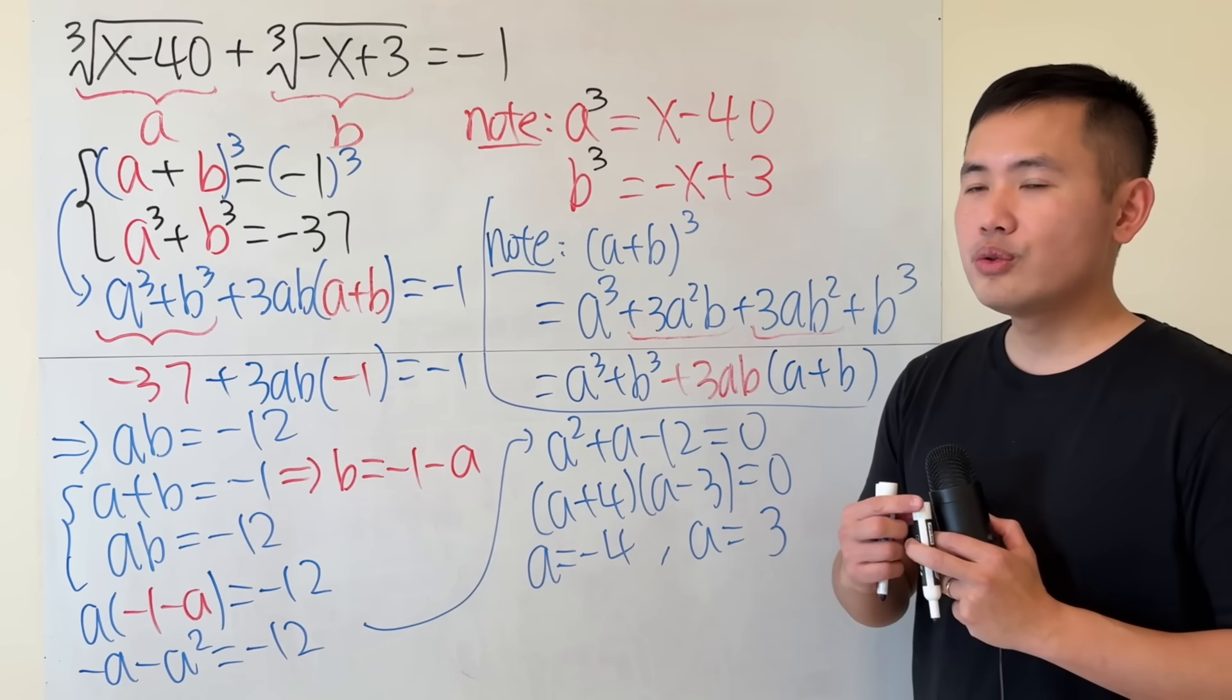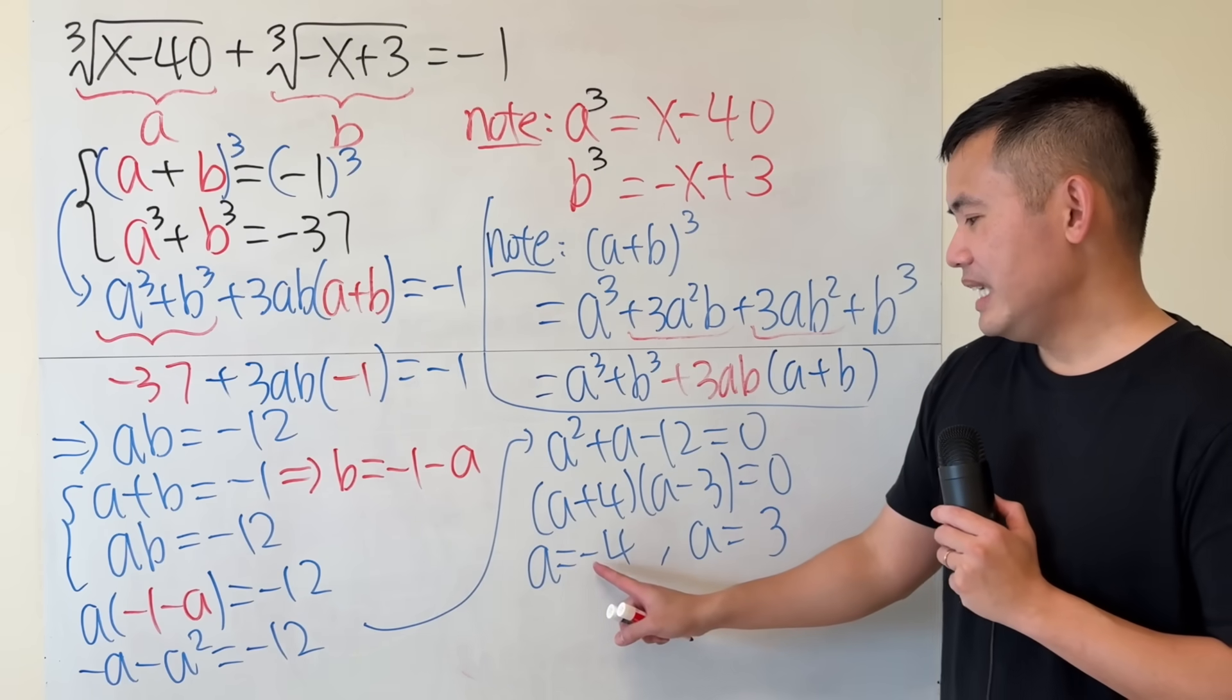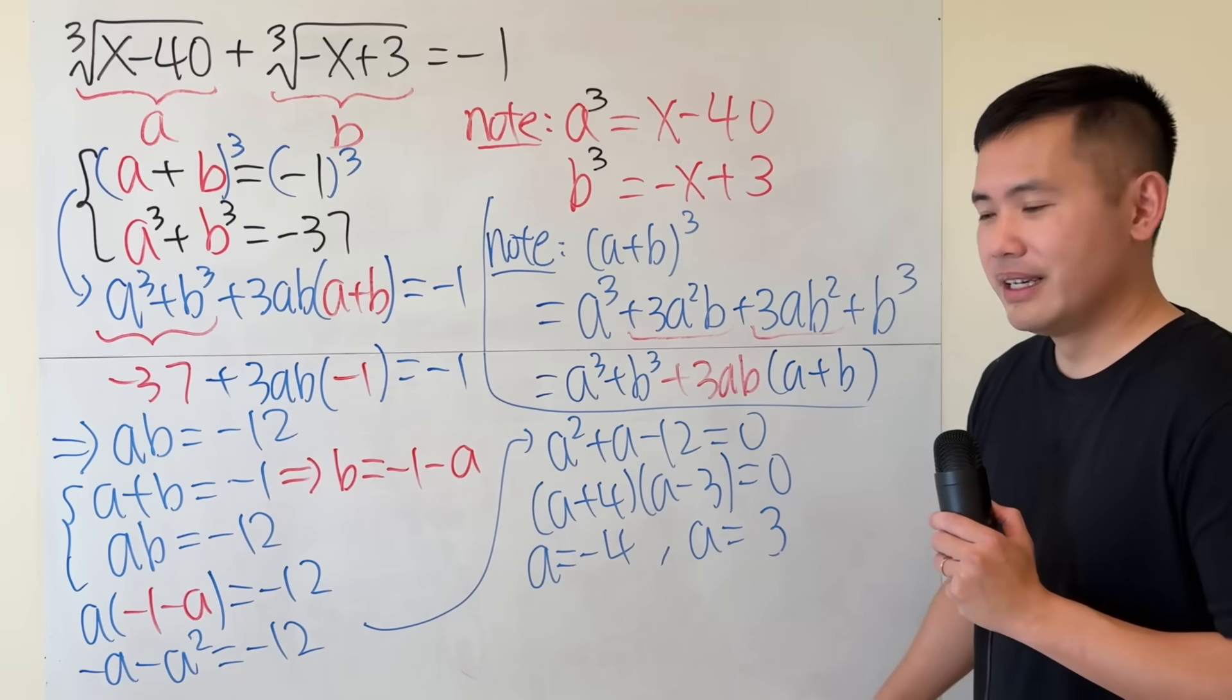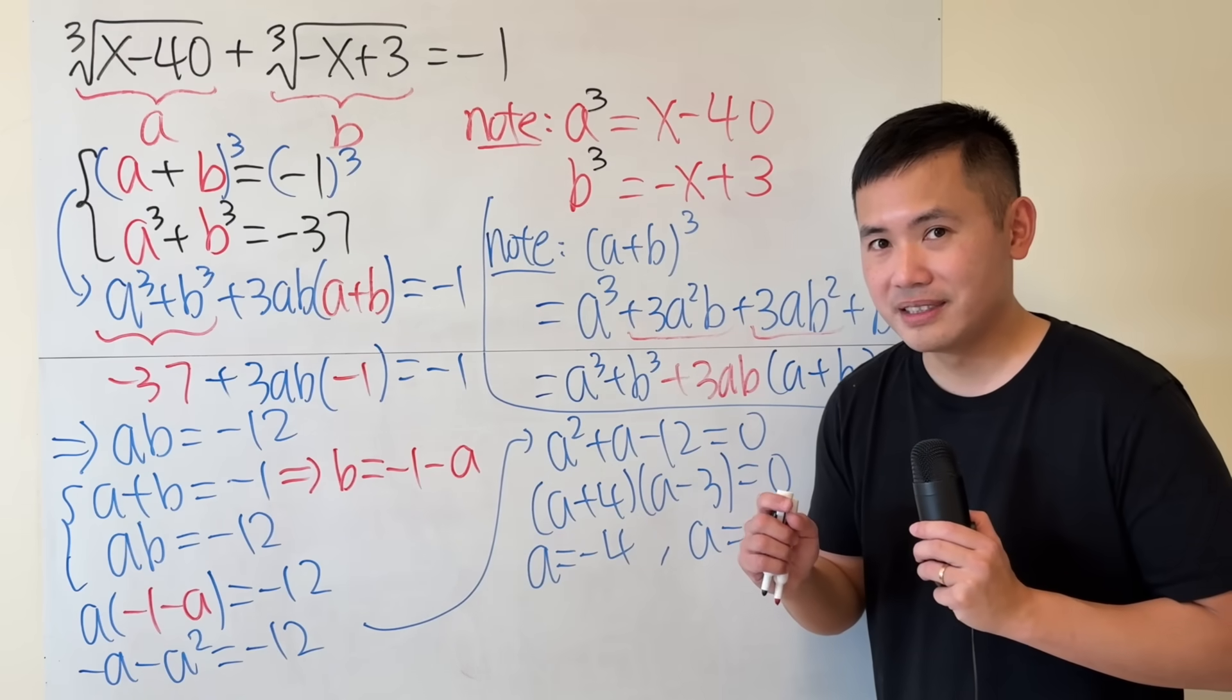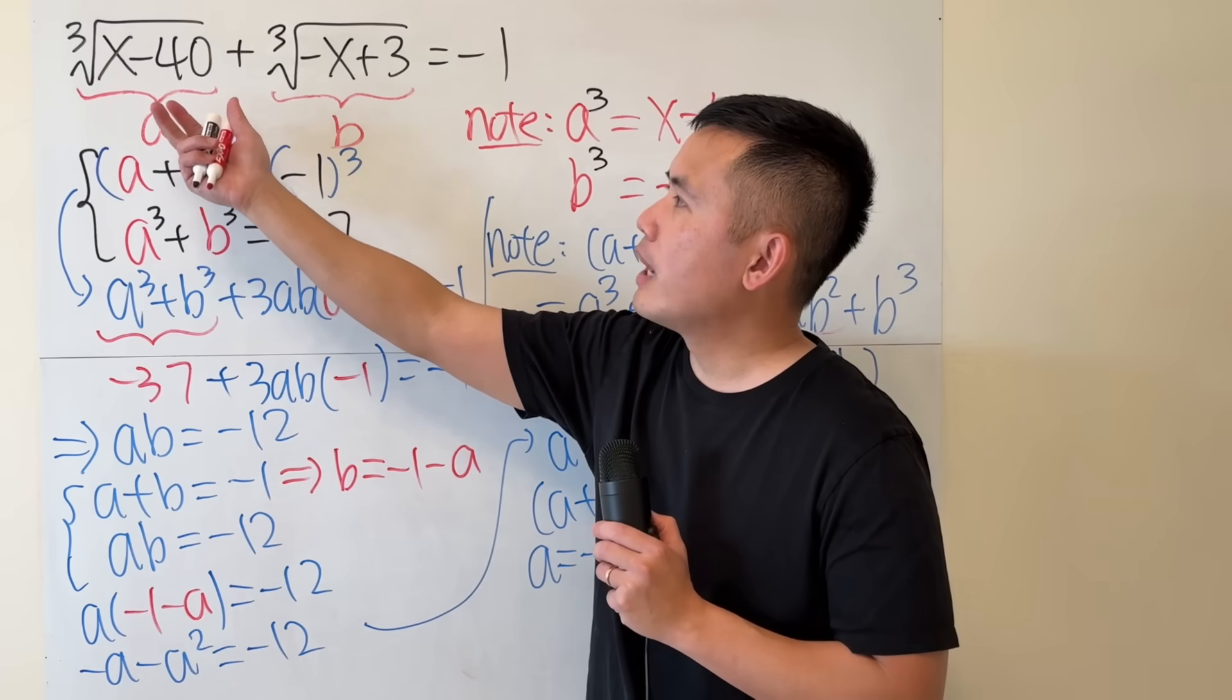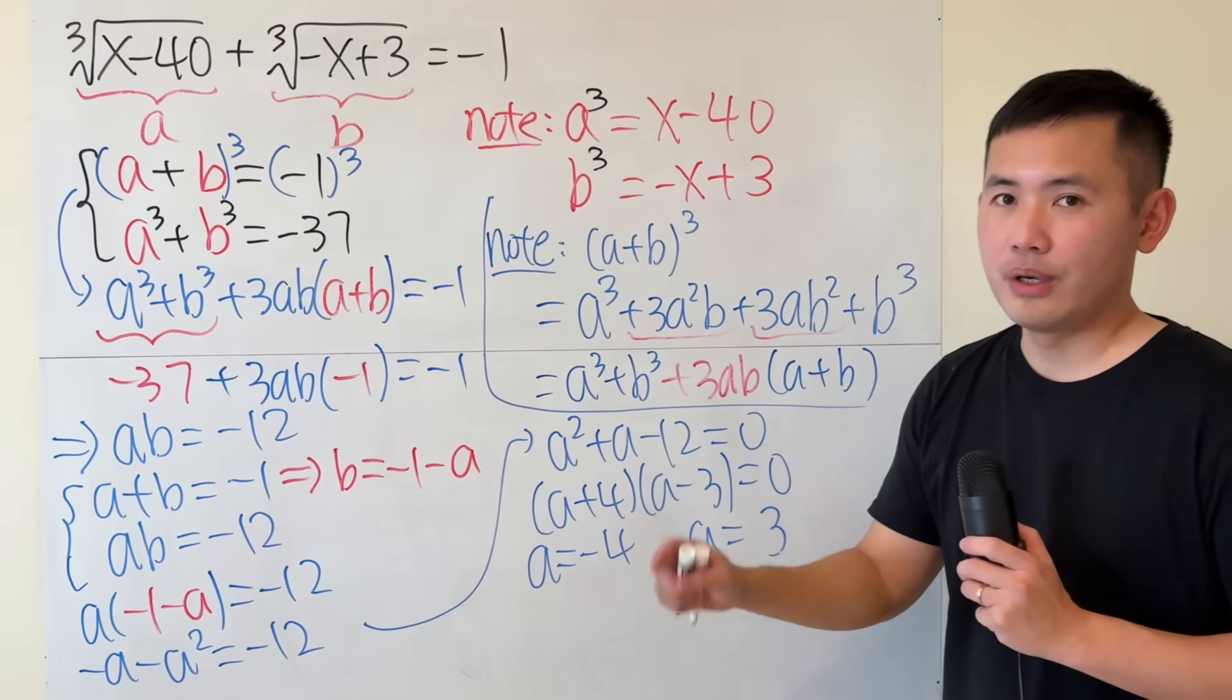Now, do we also have to find out what b is? We should, right? But for this one, it doesn't really matter because if a is negative 4, you can plug into here, b will be 3. If a is 3, plug into here, b is negative 4. Very nice. Not only that, because we are about to put this back to this expression and then figure out what x is, if you do the same numbers for b and then figure out the x right here, they will match. You can go ahead and try that.